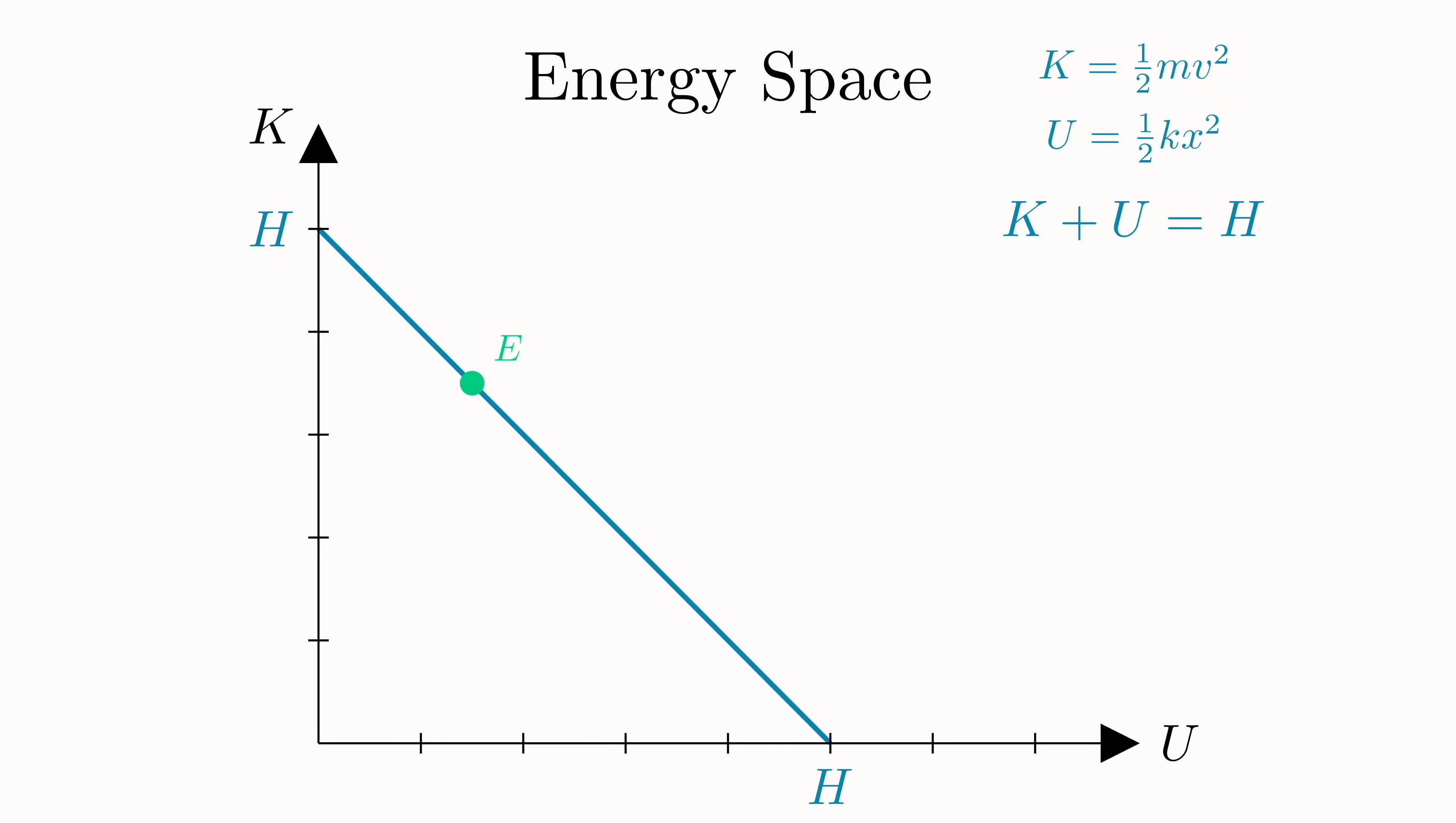Every point will always remain on this line. If we had a different starting point and therefore a different total energy, the line would just shift accordingly. All the while keeping energy conserved.